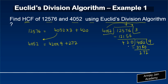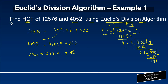Now I divide 420 by 272. It goes one time. 420 minus 272 gives a remainder of 148. So we can write: 420 = 272 × 1 + 148.